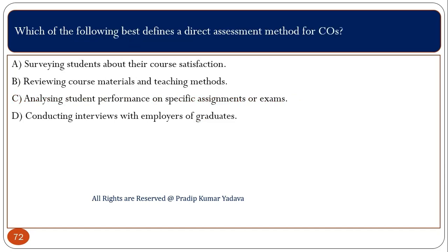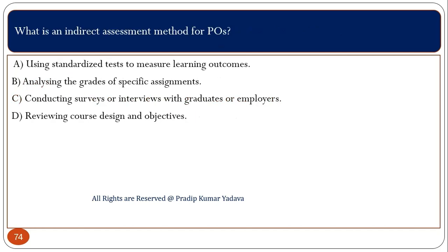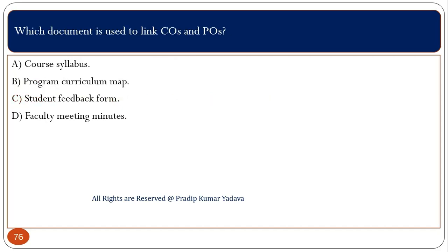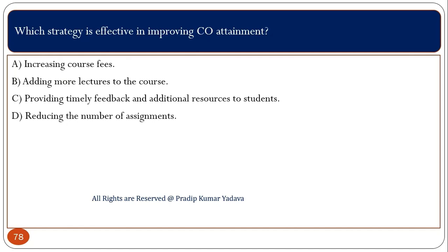Which of the following best defines a direct assessment method for CO? There are two types of assessment — indirect and direct. Direct assessment generally covers all examinations; here it is analyzing student performance on specific assignments and exams. What is an indirect assessment method for PO? Basically this covers surveys. Here option C is correct: conducting surveys. Which document is used to link CO and PO? That is the program curriculum map. Which strategy is effective in improving CO attainment? Providing timely feedback and additional resources to students.